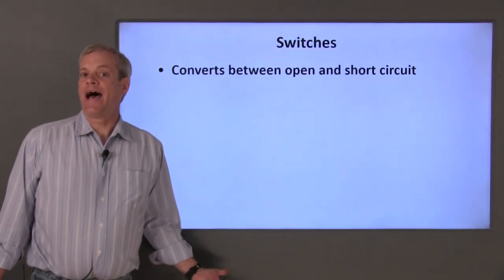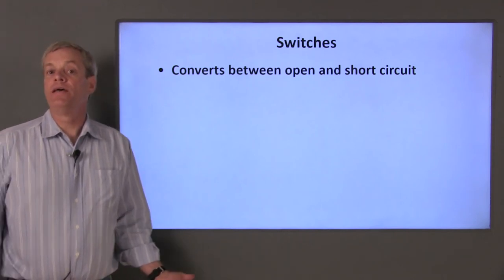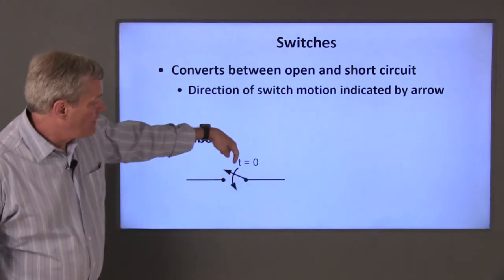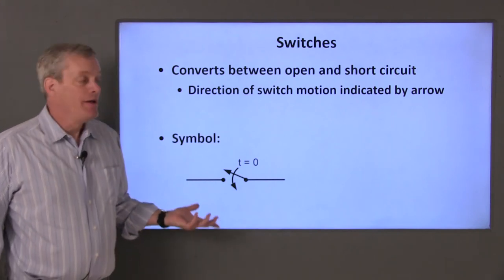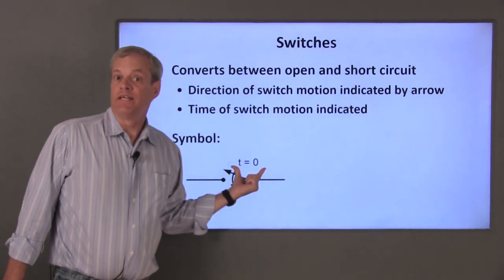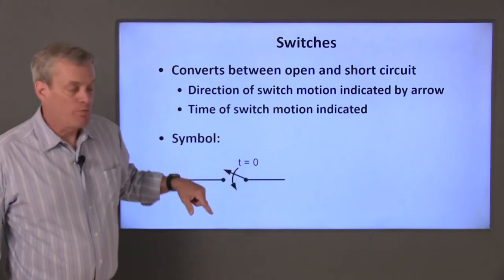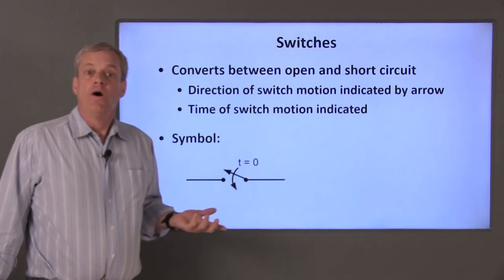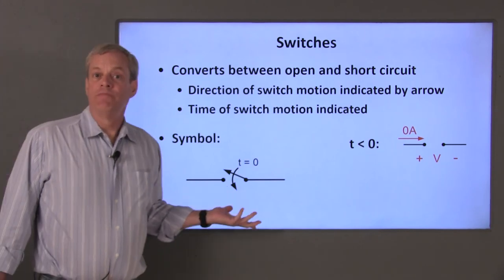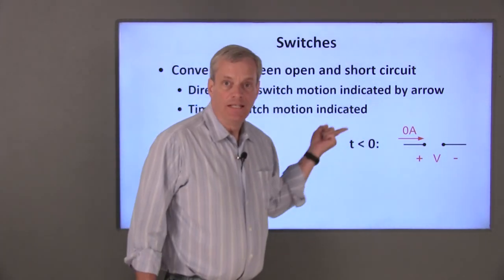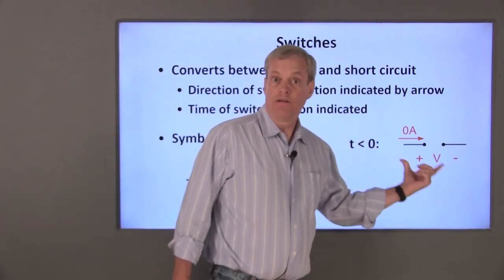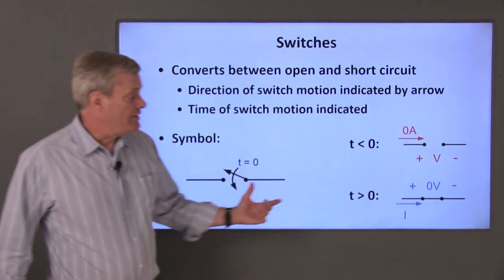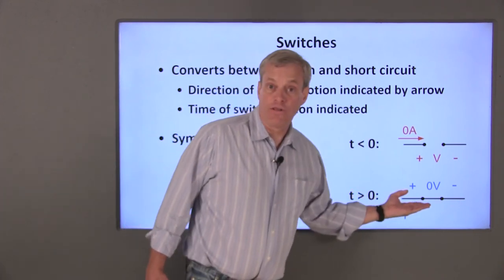Finally, switches can act as both a short circuit and an open circuit depending on the switch position. A typical switch symbol shows an arrow indicating the direction of switch motion, and the time at which the switch moves is indicated on the diagram. This switch moves at time t equals zero. When time is less than zero, the switch is open — it acts like an open circuit, so no current flows but it has an undefined voltage difference. For time greater than zero, the switch is closed — there's no voltage difference across it, but the current through the switch is unknown.